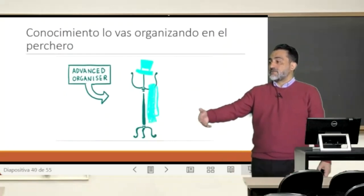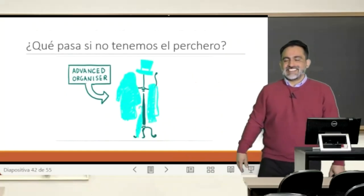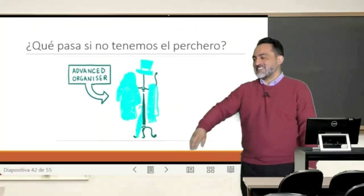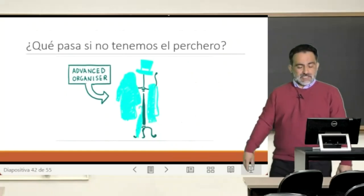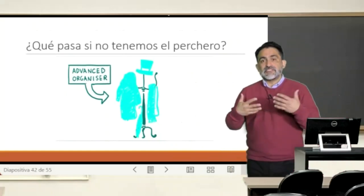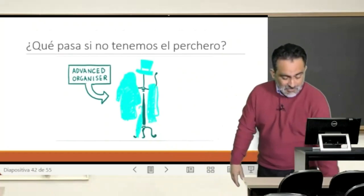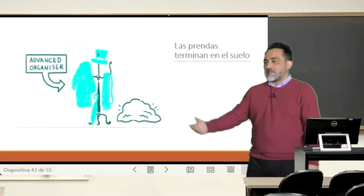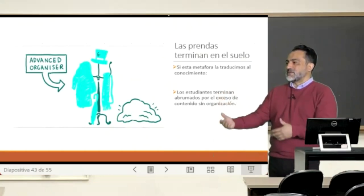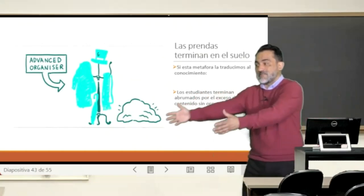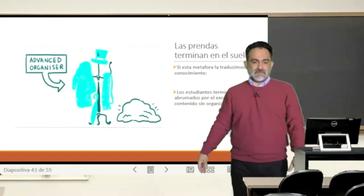And begins to show a series of elements: the cloth, the jacket, the paraguas — this is English, so many people are not as familiar with paraguas. So what is the problem if we don't give a student an organization of this, which we call element of knowledge? What will happen is that the cloth and these elements are going to end up on the ground. With this metaphor of knowledge, we can say that students end up overwhelmed by the great amount of content and knowledge, all without any spatial structure between them.